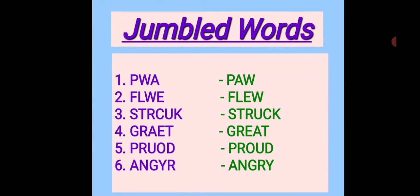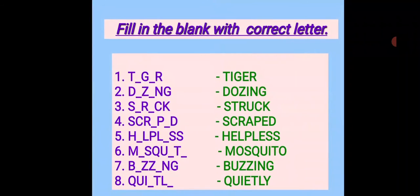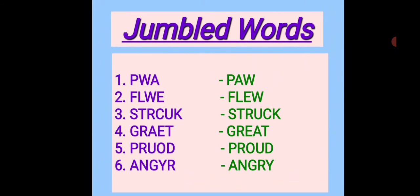Now we will do the jumbled words. Number one: P-W-A — answer is paw, P-A-W. Number two: F-L-W-E — answer is flew. Number three: S-T-R-C-U-K — answer is struck. Number four: G-R-A-E-T — answer is great. Number five: P-R-U-O-D — answer is proud. Number six: A-N-G-Y-R — answer is angry.